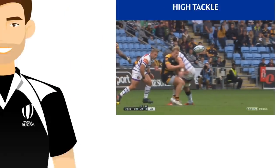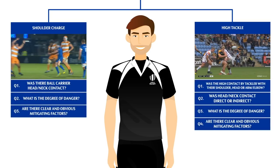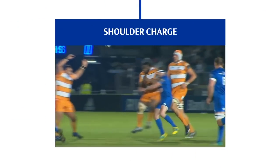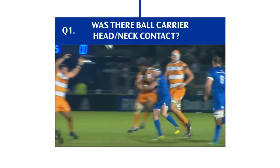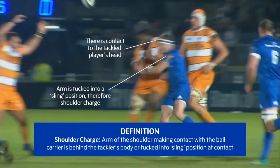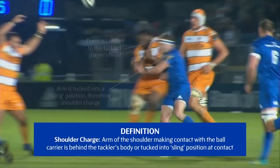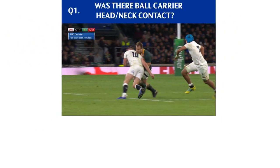Depending on whether the match officials are dealing with a shoulder charge or a high tackle, they must ask a series of questions to determine the sanction. For a shoulder charge, the first question is whether there is any contact between the tackler's shoulder and the head or neck of the tackled player. In this example, there is clear head contact, recognised as per the definition for head contact. Here is an example of a shoulder charge where there is no contact to the head or neck of the ball carrier.